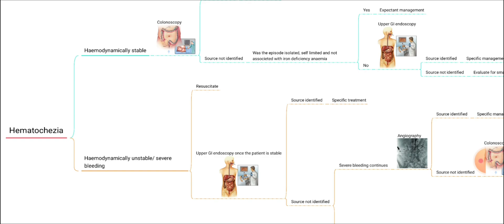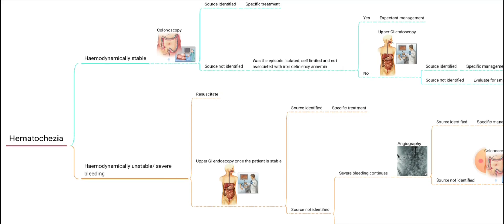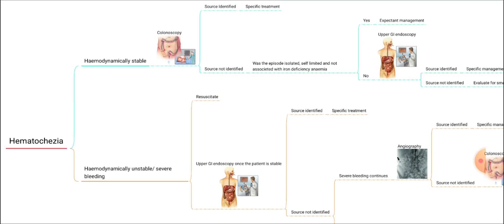The topic is hematochezia. Hematochezia is PR bleeding, which is an important topic asked in your long cases, short questions, and also in MCQs. In PR bleeding, there are many aspects you should know: the symptom analysis, the history, examination, and evaluation, the management options — everything may be asked in your long cases. In the MCQs, the parts of those theory sections will be asked.